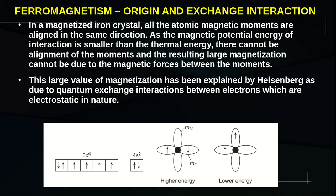Ferromagnetic materials possess permanent magnetization even in the absence of an applied magnetic field. In a magnetized iron crystal — iron is a ferromagnetic material — all the atomic magnetic moments are aligned in the same direction. If the magnetic potential energy of interaction is smaller than the thermal energy, there cannot be any alignment of the moments, and the resulting large magnetization cannot be due to the magnetic forces between the moments.